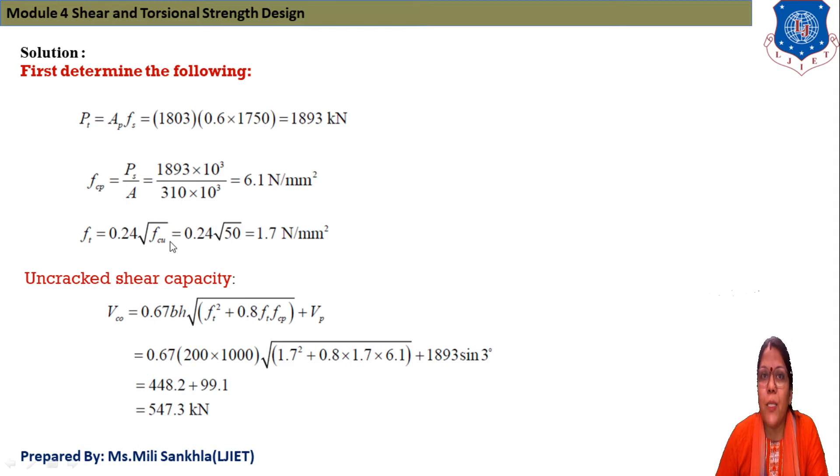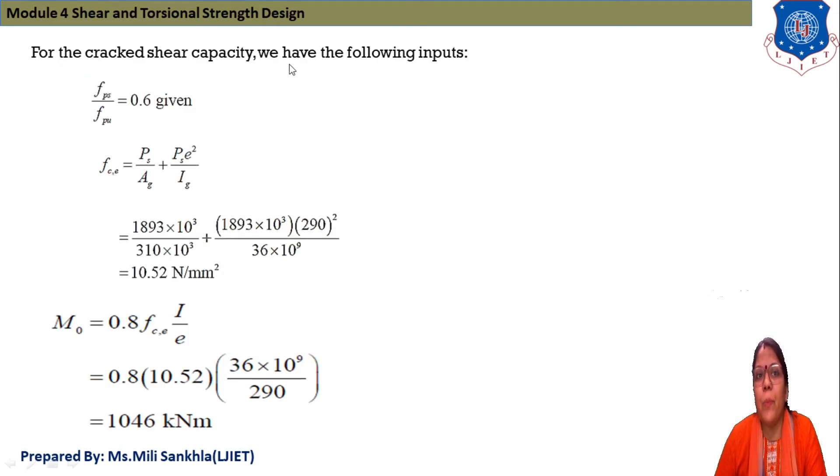Then ft equals 0.24√fcu or we can say fck, that is 50, giving 1.7 N/mm². Next for shear capacity of uncracked section, Vcu equals 0.67bh√(ft² + 0.8ft·fcp) + Vp. 0.67 × b equals 200 and height of section is 1000 and under root of ft 1.7, 0.8 × 1.7 and fcp equals 6.1.